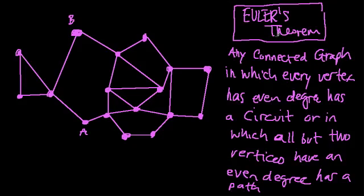Proving another one of Euler's theorems, which is very similar to the ones in the previous videos that I talked about. But here, we're saying that if you have a connected graph in which every vertex has an even degree, then you have an Eulerian circuit.